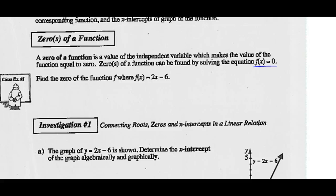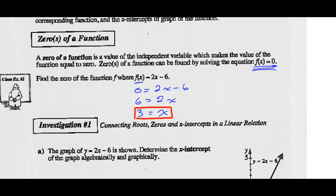The zeros of the function are really the x-intercepts. So find the zero of the function f, where f(x) = 2x - 6. We were just told that to find the zero of a function, you're going to solve the equation f(x) = 0. So we let f(x) equal zero: 0 = 2x - 6. Add 6 to both sides, then divide both sides by 2. 6 divided by 2 is 3, so the zero of the function is x = 3.